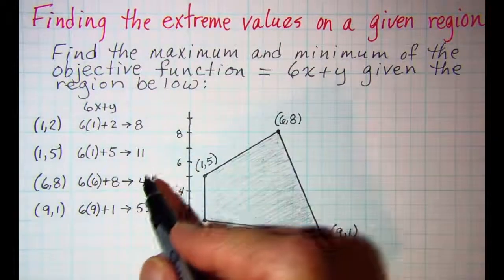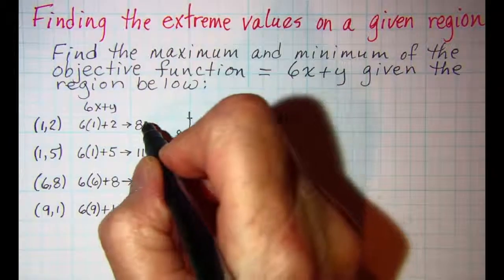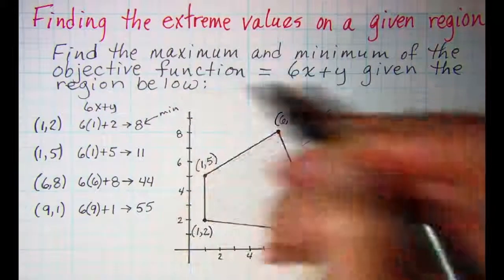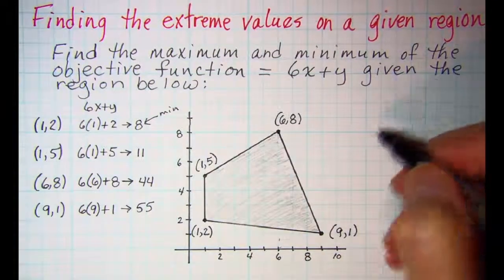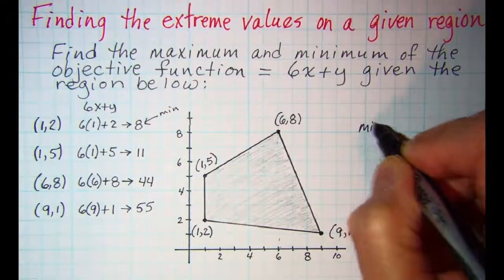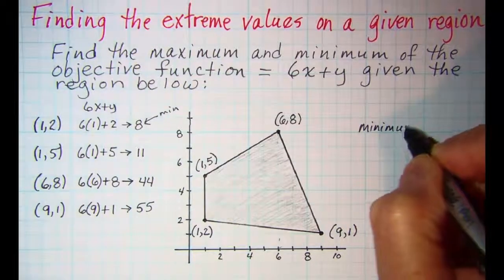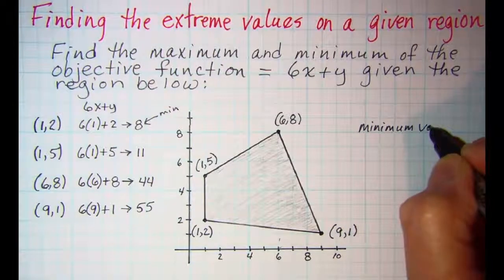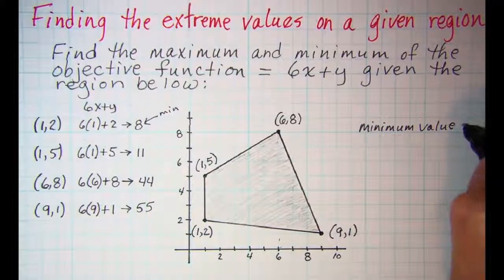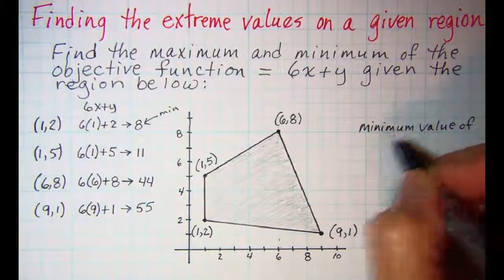So it looks like our minimum occurs at the point giving a value of 8, so we have a minimum value of 8.